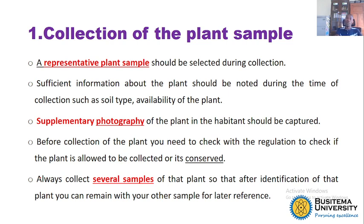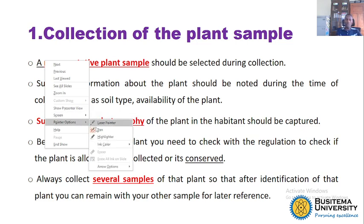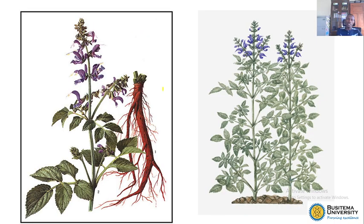During collection, what you always need is a representative sample. That sample should be truly representative, meaning it should contain all its parts — the leaves and roots — intact. This is an example of collecting a plant from the field with all its parts intact; this is an example of a representative sample.